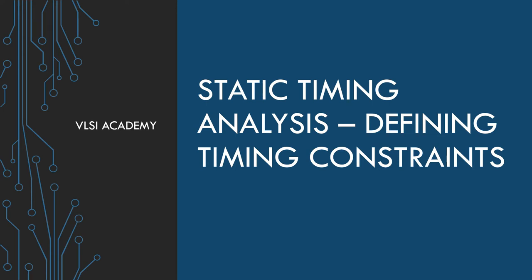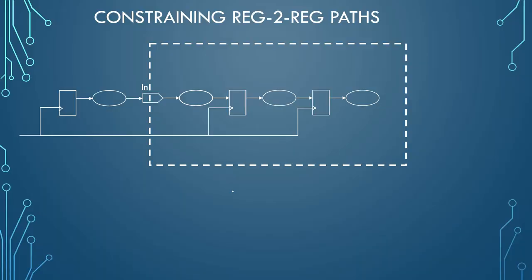Hello everyone, welcome to VLSI Academy. This is the 15th lecture and today we will learn about latency modeling and how to define timing constraints. We will try to understand constraining of input paths and constraining of output paths. Before we start defining the constraints, first let us see what is meant by clock latency and how we measure it.